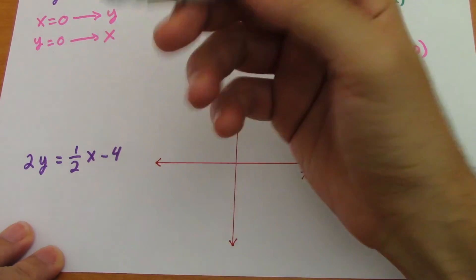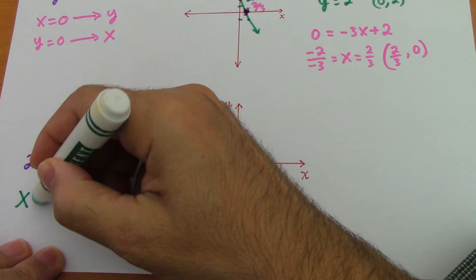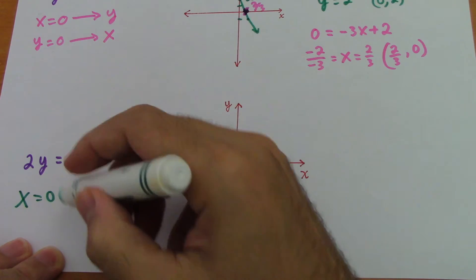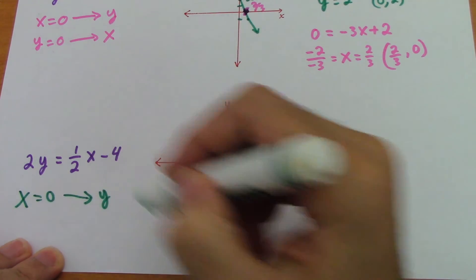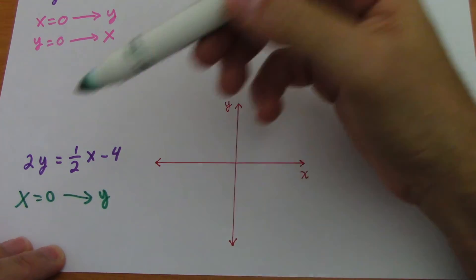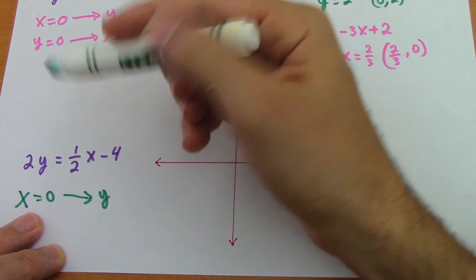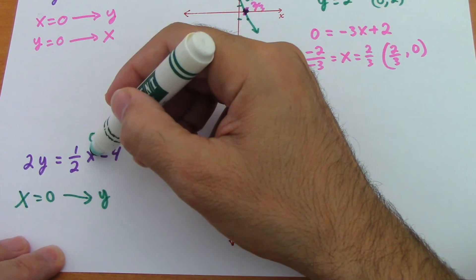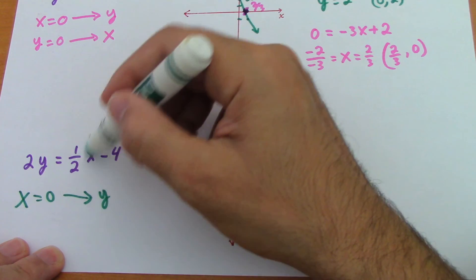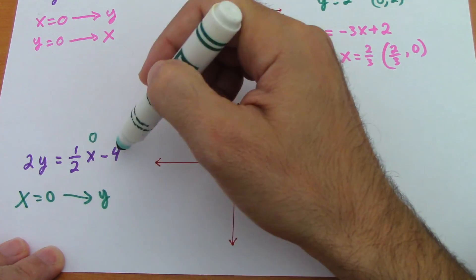Okay, to find again, to find the y intercept, x equals 0. x equals 0, we're going to find the y intercept. Let's do that first. x equals 0 means we'll replace here, we substitute 0 times 1 half is 0, 2y equals negative 4.